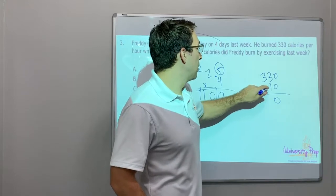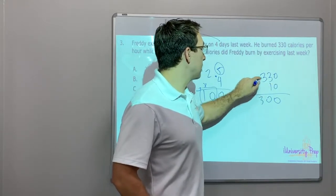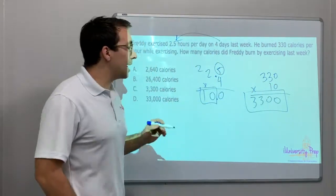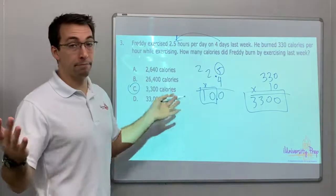Three hundred thirty times ten. One times zero is zero, one times three is three, one times three is three. He burned 3,300 calories last week. Bingo.